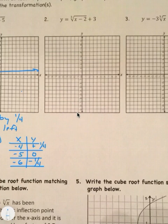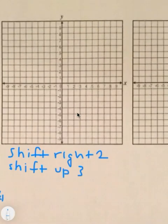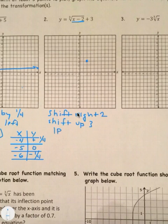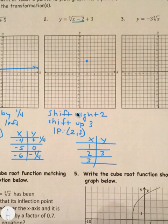Number two: cube root of x minus 2, plus 3. Since x is a liar, x minus 2 means shift right two units. The plus 3 means shift up three. Going right two and up three puts the inflection point at (2, 3). Using x equals 1 and x equals 3 as plotting points: when x is 1, one minus two is negative one, cube root of negative one is negative one, plus three gives y equals 2. When x is 3, three minus two is one, cube root of one is one, plus three gives y equals 4.